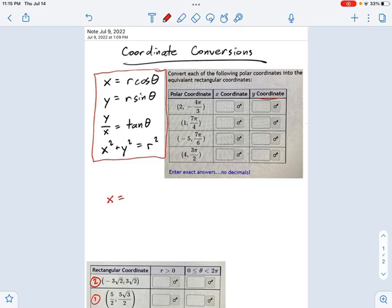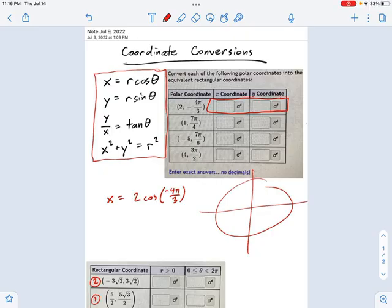x equals r. Now, r is 2 times the cosine of, what's that angle? Negative 4 pi over 3. Not the most convenient angle, but that's what we've got. And if you're thinking about the unit circle, it kind of looks like this. And negative 4 pi over 3 is going in the negative direction all the way over to here or so.